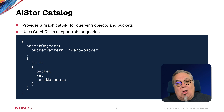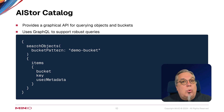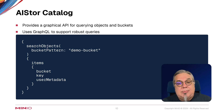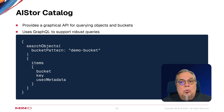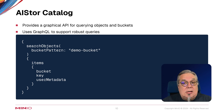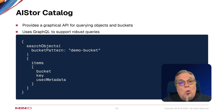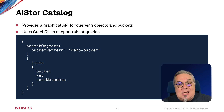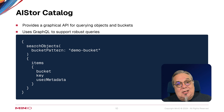The AI Store catalog gives us a nice graphical API for querying objects and buckets across all of our deployments. It uses GraphQL to support robust queries. The GraphQL example you see here on the screen is querying for a demo bucket, and it's going to return back the bucket, the key, and any user metadata about any objects that it finds.